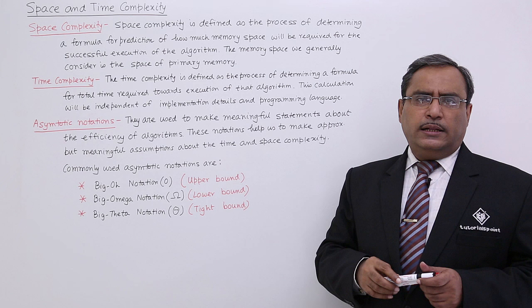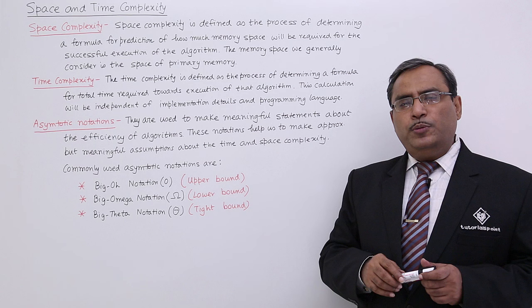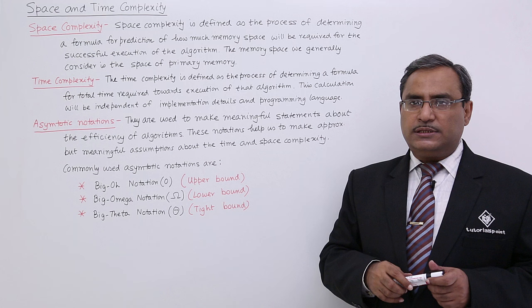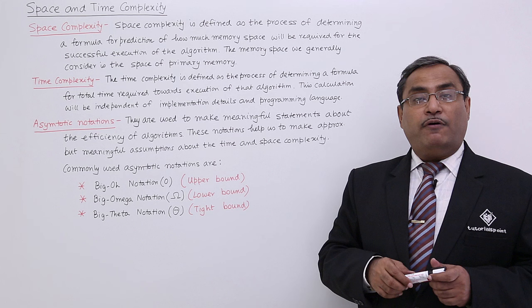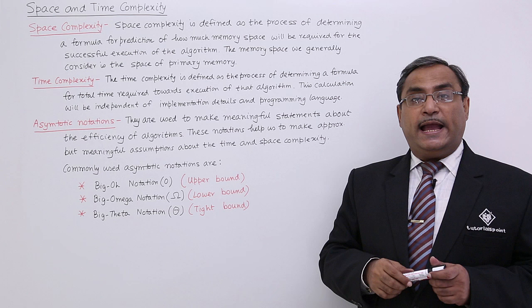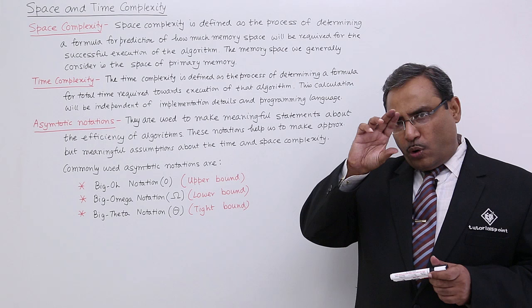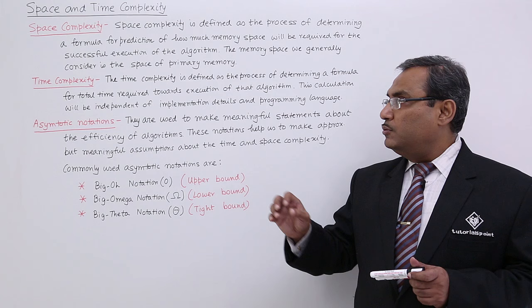Do not consider that a program which occupies very minimum space in the primary memory will also have minimum time complexity. That is not the same, because a program might contain say 10 instructions. Out of those 10 instructions, 8 lines are in a loop and the loop will get executed 100 times. Then during execution, the program is executing 8 × 100 + 2, that is 802 instructions. So the memory space is occupied only for 10 instructions, but during execution it is actually executing 802 instructions. So the time complexity of the program will be high.